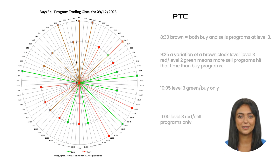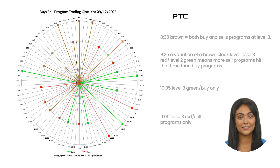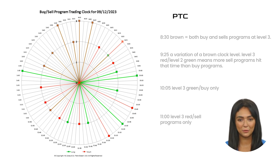Let's take a look at this day and understand what is happening during these times. At 8:30, a brown clock level three means more patterns hit this time and both sell and buy programs were activated — your bets are 50/50 based on time only. At 9:25, this is a variation of a brown clock and more selling programs are on this time than buying programs. At 10:05, a level two green only — if you are short since the first hours of the morning, you should be looking to cover some of your positions.